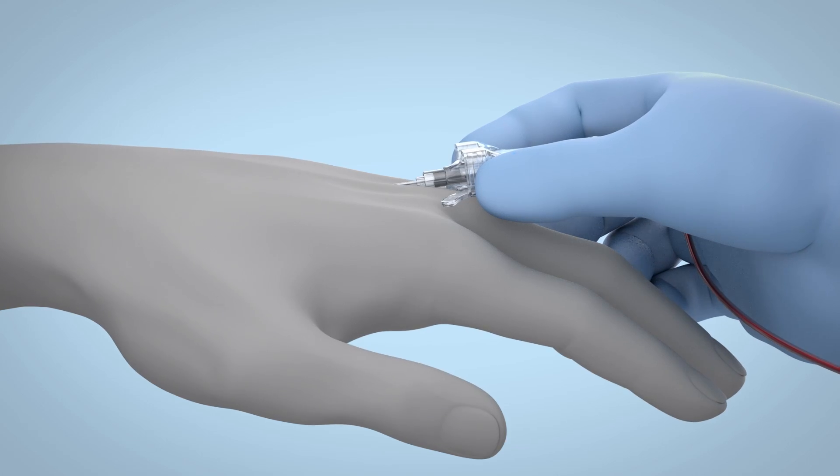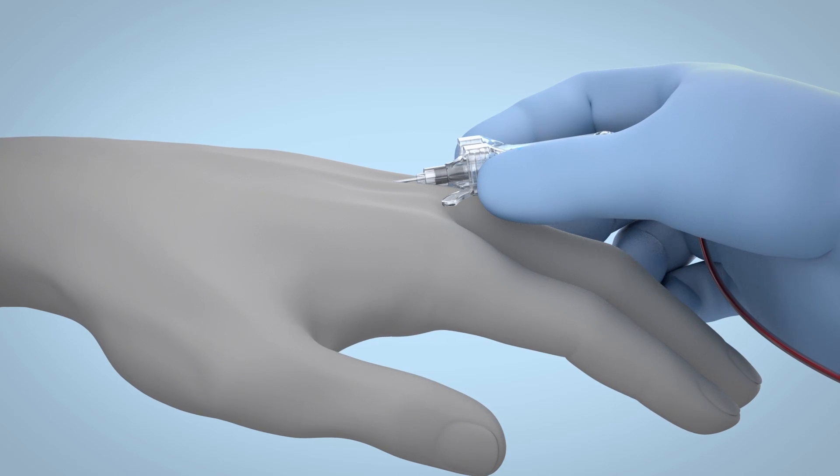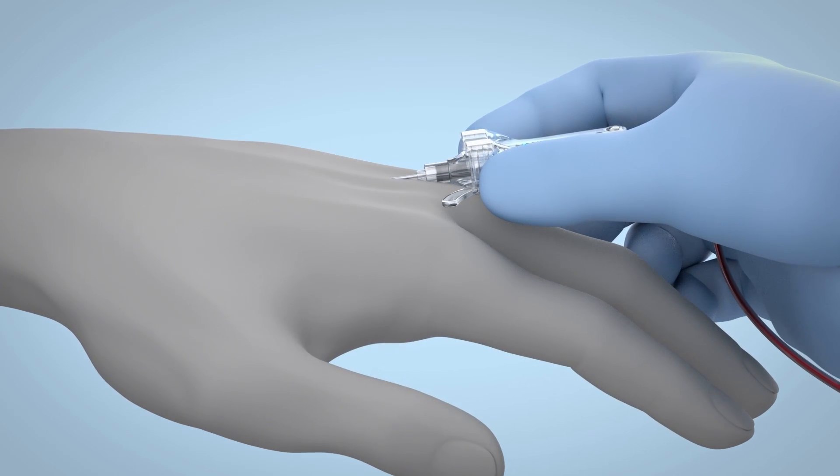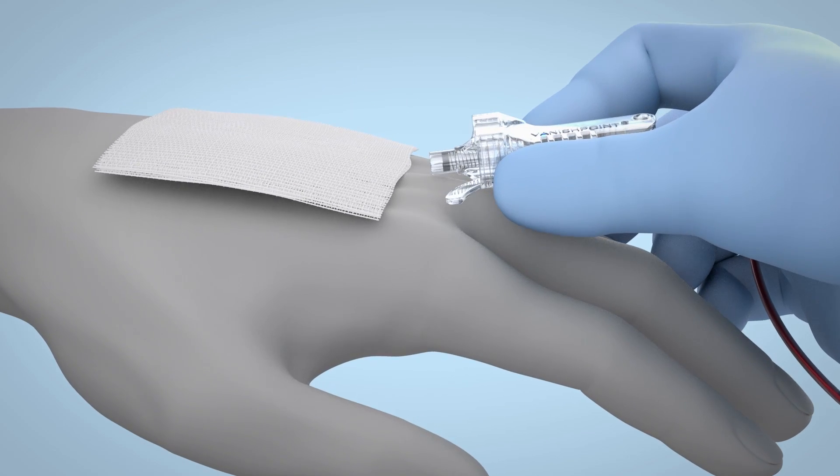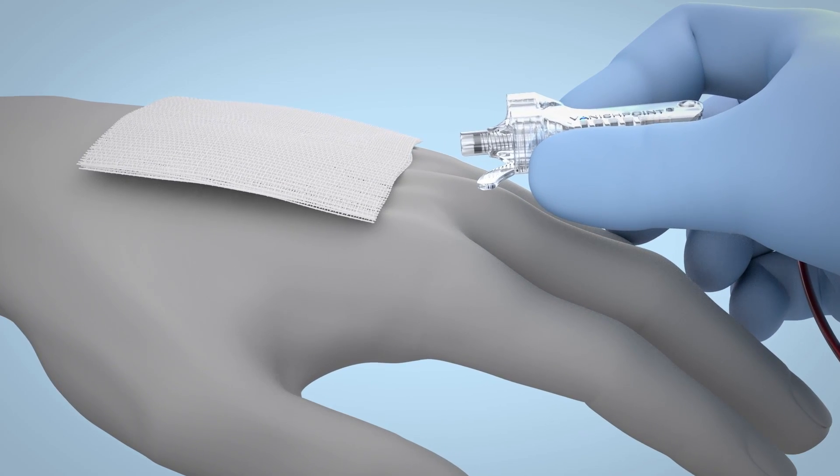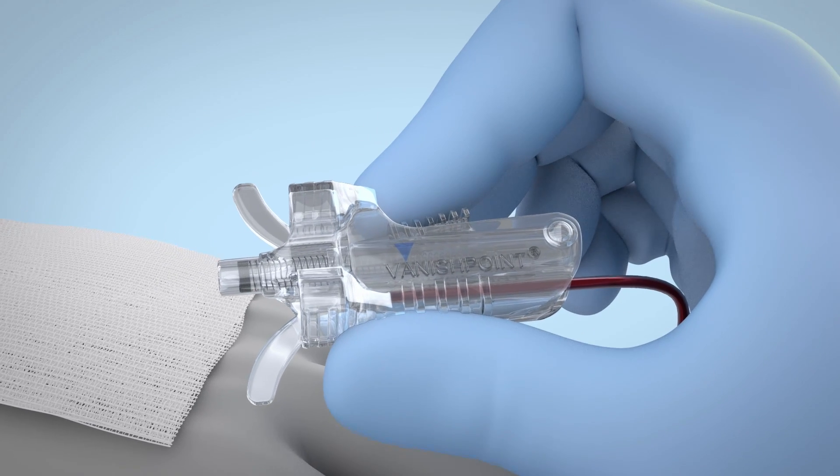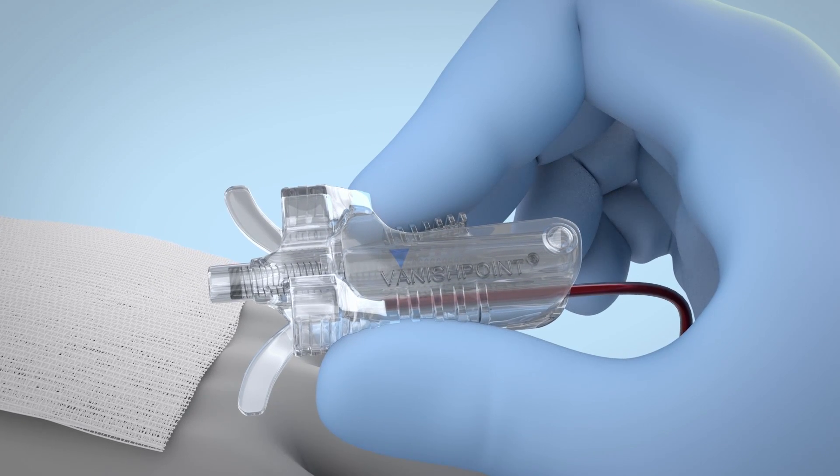When blood collection is complete and while the needle is still in the patient's vein, firmly depress the retraction trigger. Activating the retraction mechanism while the needle is still in the patient's vein virtually eliminates exposure to the contaminated needle.